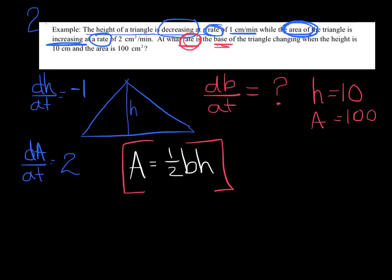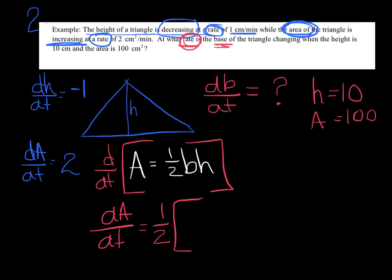We want to take the derivative with respect to time. If you don't see the letter T in the variable, you have to add a d-whatever/dt. The derivative of A is dA/dt. On the right side, base times height tells me I need to apply the product rule. I like to pull the ½ out, and do product rule on the two variables B and H: B · dH/dt + H · dB/dt.